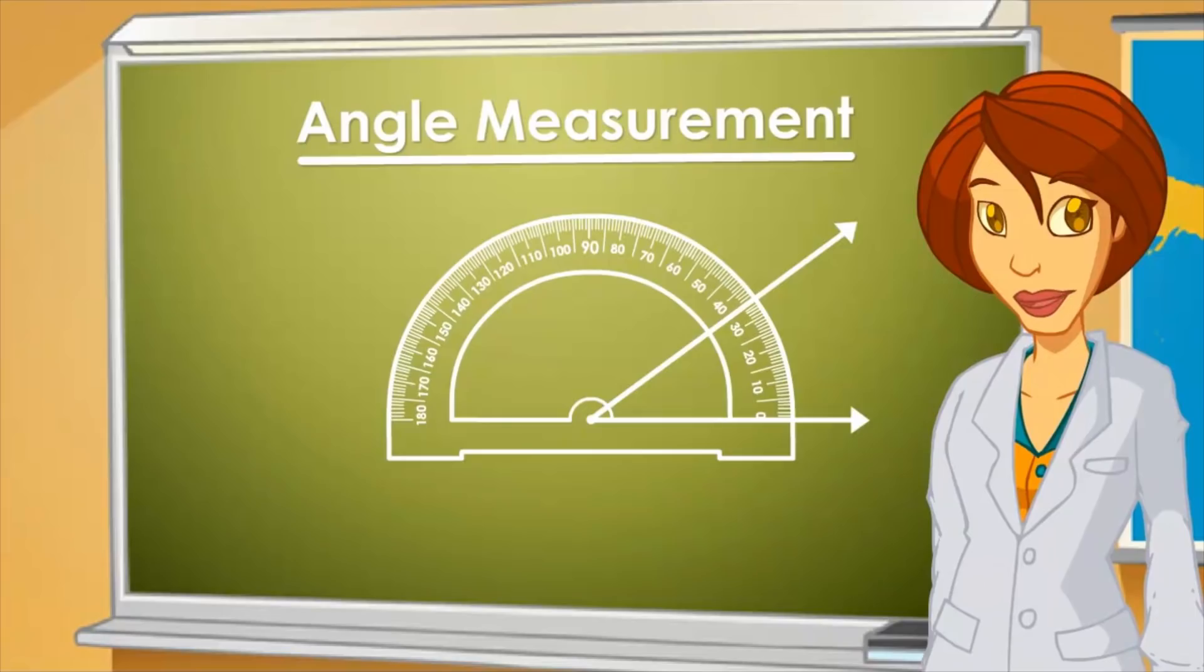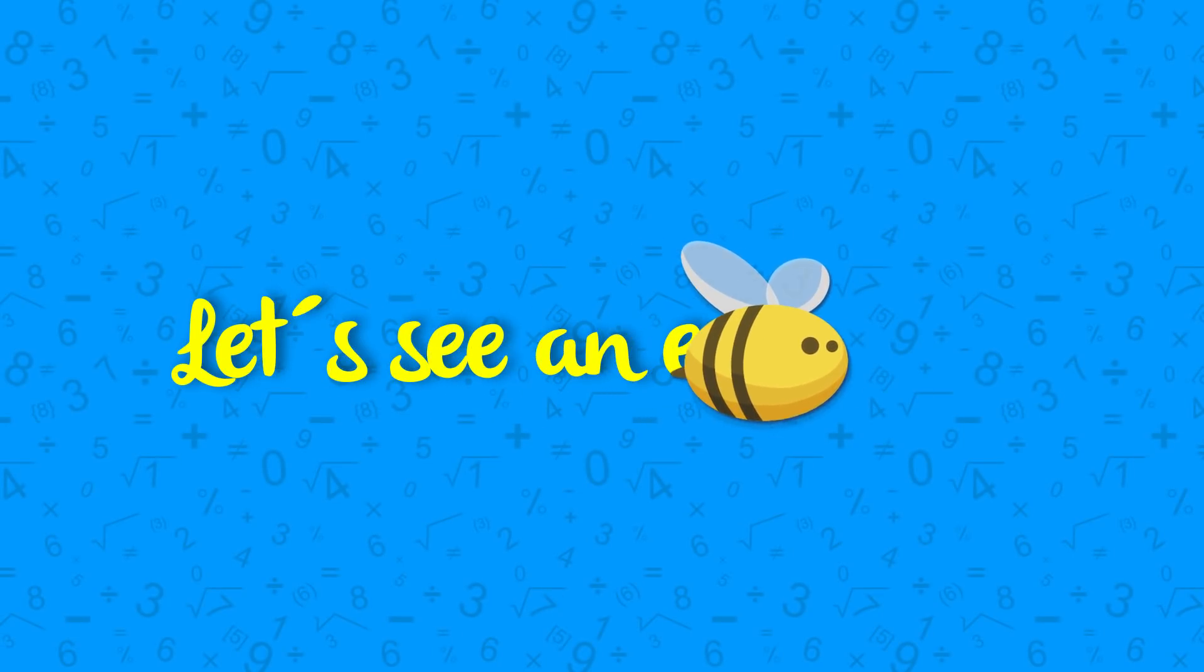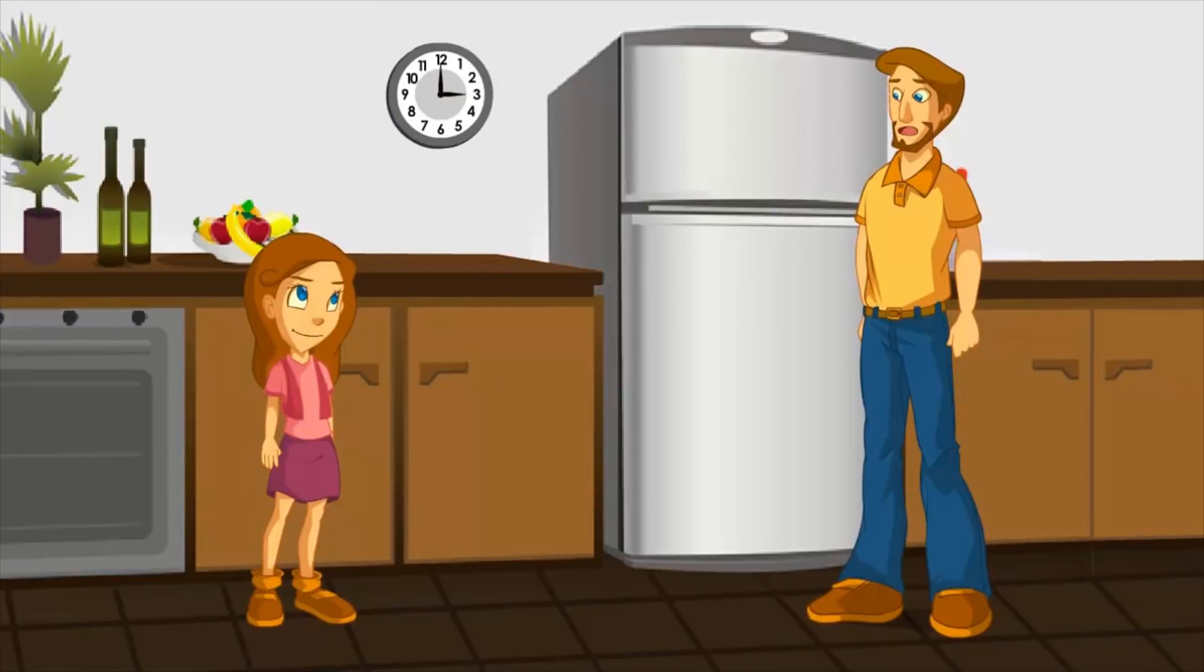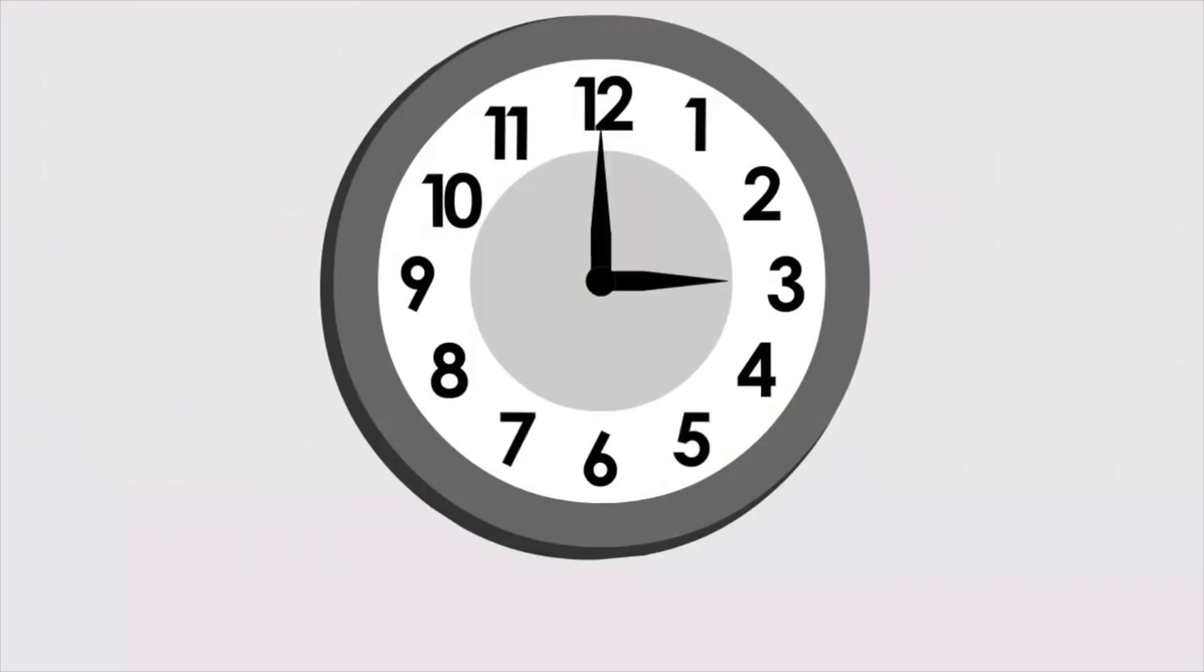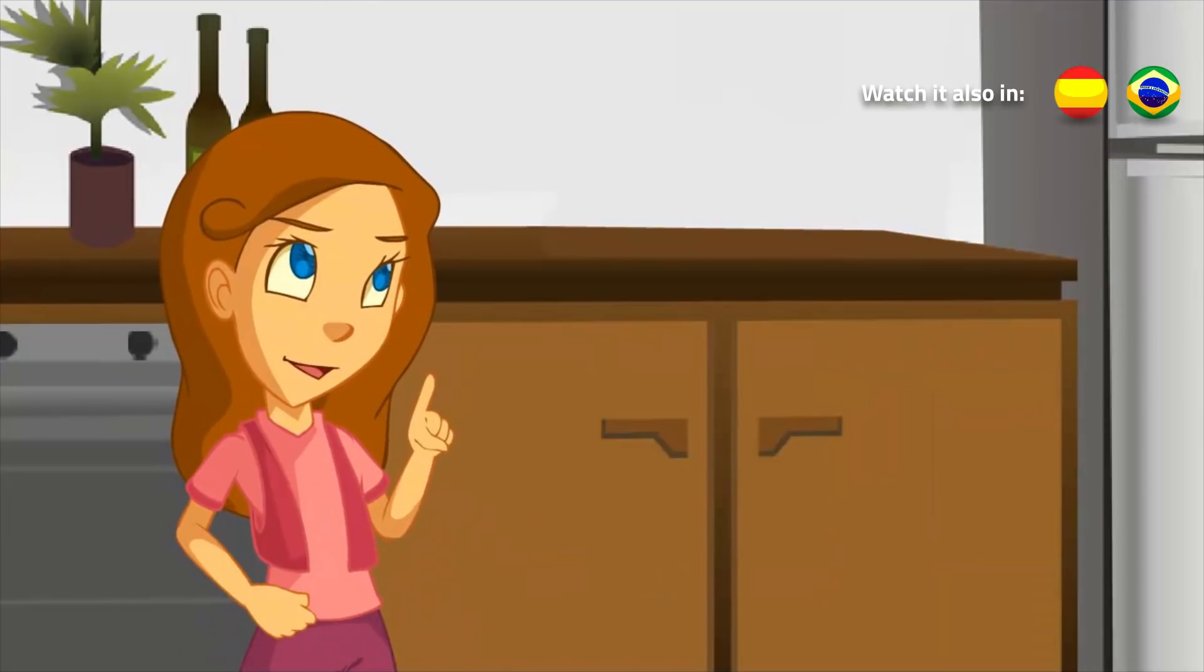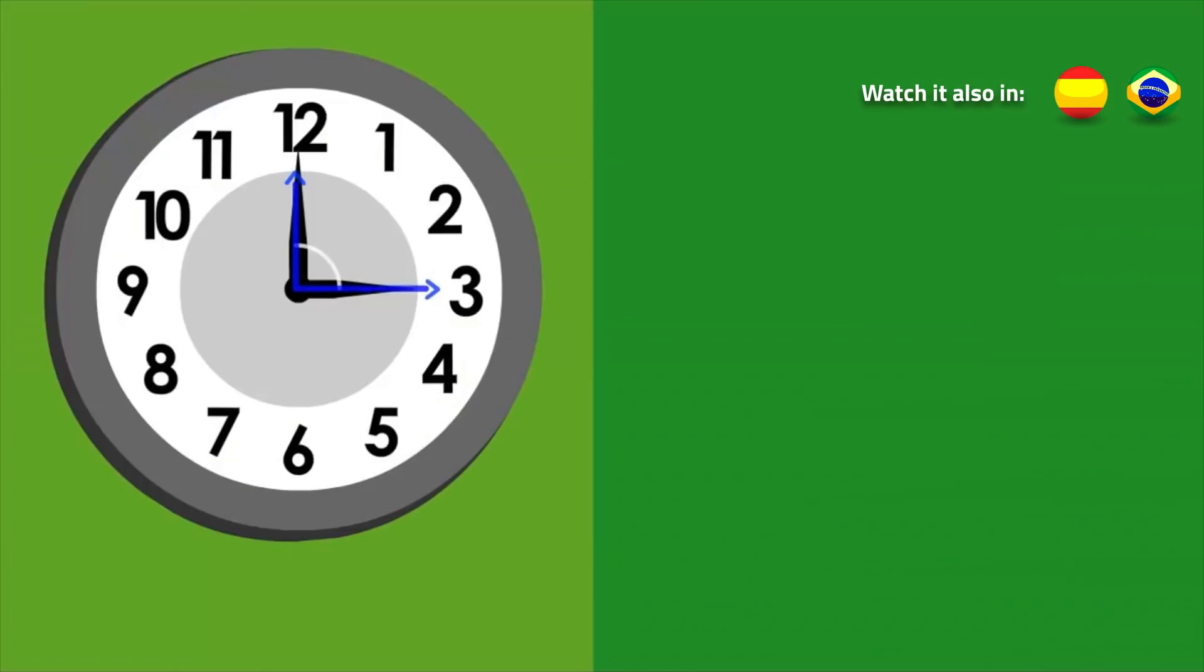Lucy, could you check the clock in the kitchen and tell me the time please? It's 90 degrees. What are you saying Lucy? It's three o'clock dad. Three! I've been practicing a lot with math, measuring angles with the protractor. So when I saw the hands of the clock in a right angle I pictured the time in degrees. How clever!